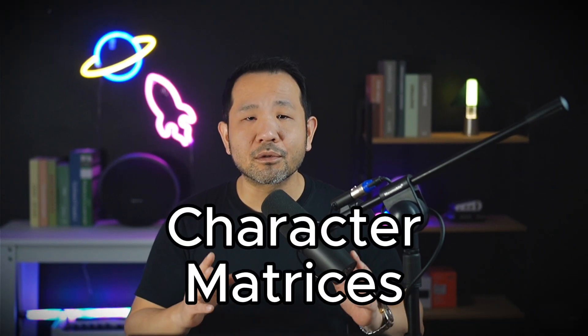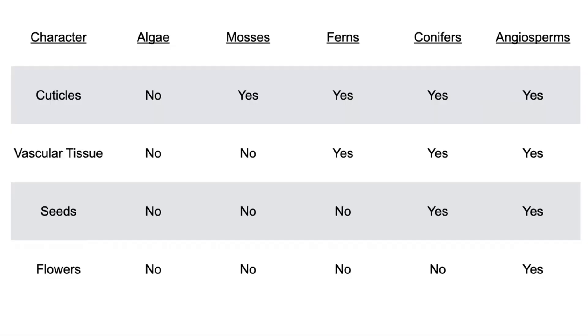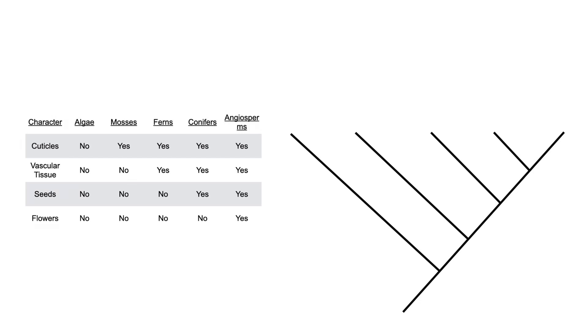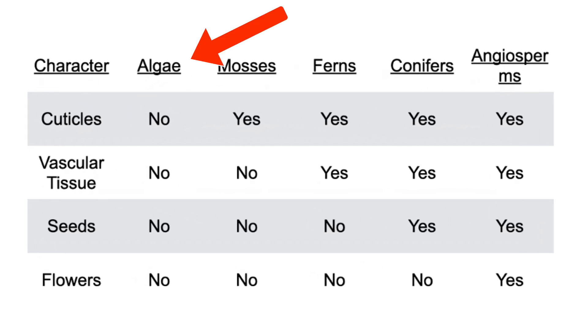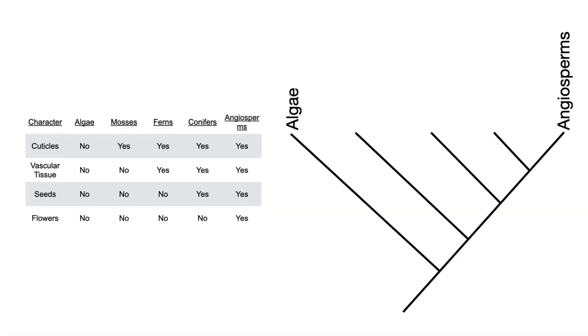Moving on to character matrices, here we see a very common representation of the evolution of plants. If you already know about plant evolution, you can do this without any data — but let's try it out with the data for the sake of this example. With character matrices, it's actually easier to work with the inverted triangle-shaped cladogram. Let's go ahead and draw five species at these branch tips. I always like to begin by identifying the placement of species with the least number of characteristics and the greatest number of characteristics — it's like doing a jigsaw puzzle by identifying the edge pieces first. We're going to put the algae as the outgroup and angiosperms at the tip on the right side.